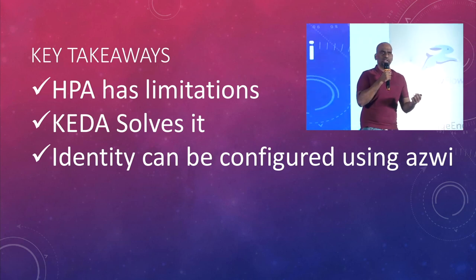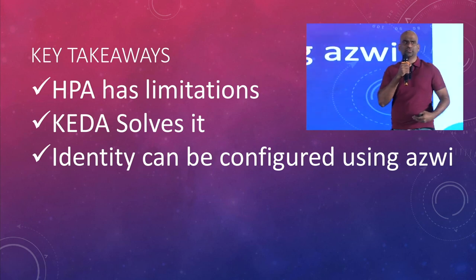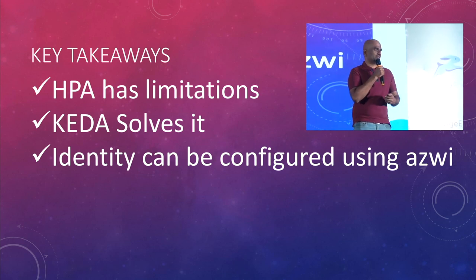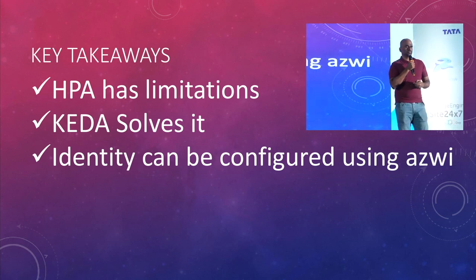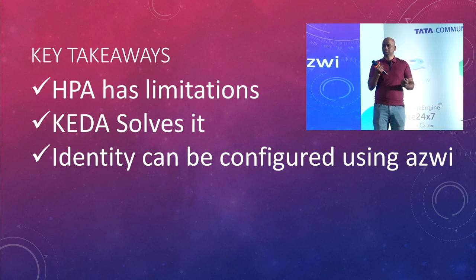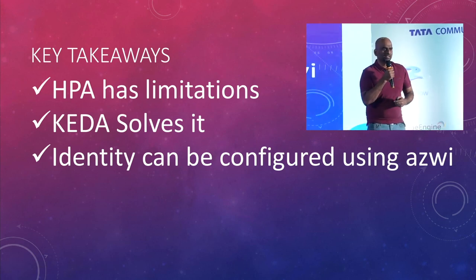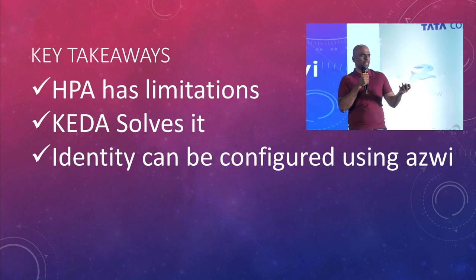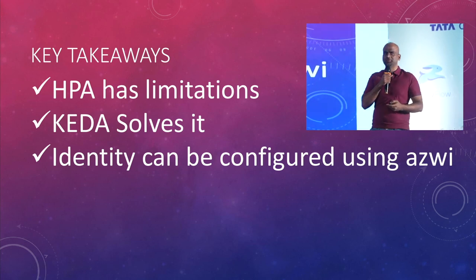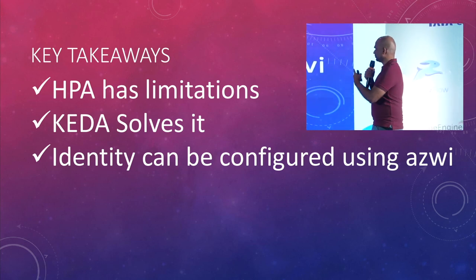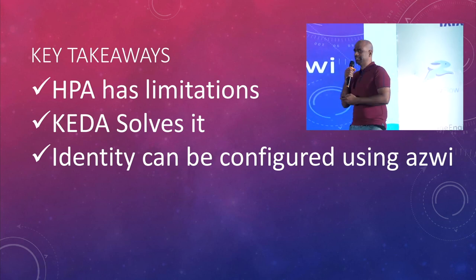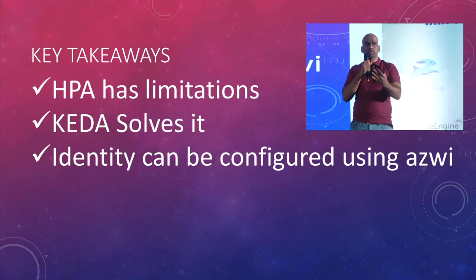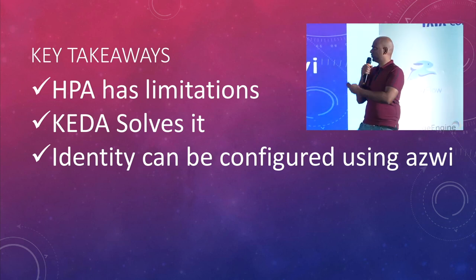Major takeaways from this 20-minute session: HPA has its limitations — you cannot scale based on any event or external sources. That is a major problem with HPA, and it is solved by KEDA. The identity can be configured using ACWI. Whenever you want any pod to access Azure resources or any other resources, you can use ACWI.